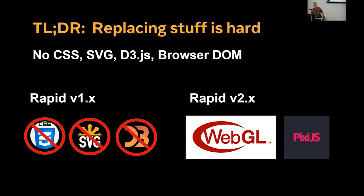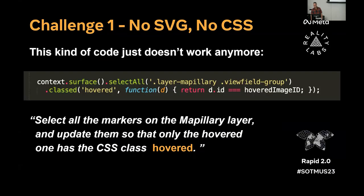The stuff on the left — the CSS, the SVG, and the D3 — it's not that these are bad technologies, but they do tend to shuffle around the browser's document a lot. When you're changing the DOM in the browser, you just hit this wall of performance where you can't make it go any faster. It put limits on how much stuff we could put into the scene and how quickly we could update it. So the first challenge: no SVG, no CSS.